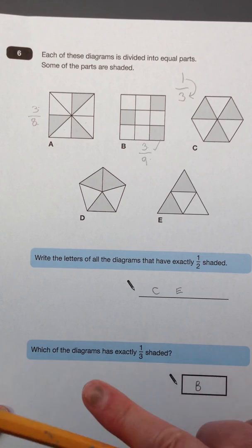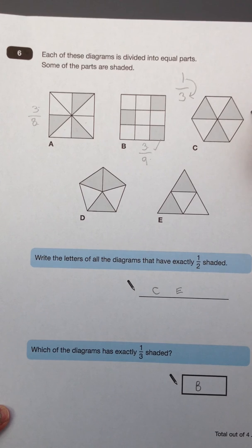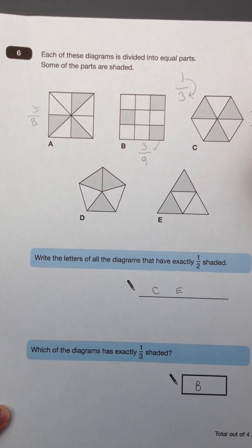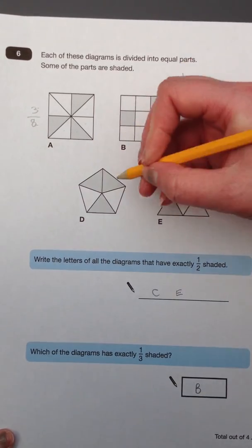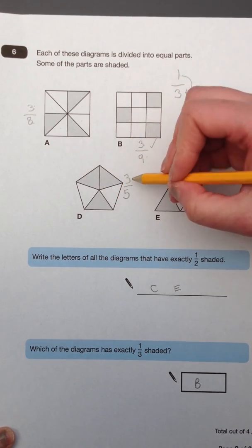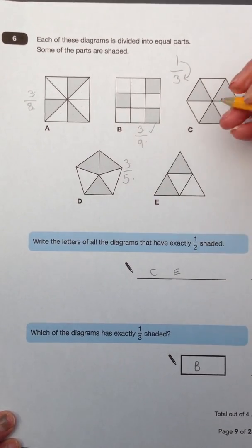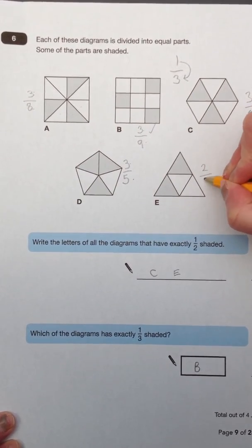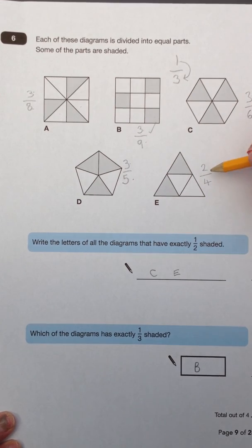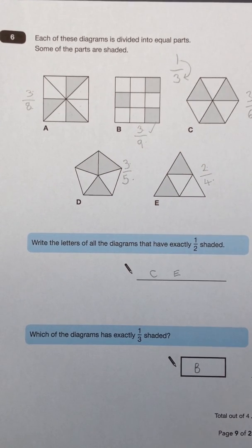We're only looking for one answer here, but let's just check that we've got the right answer. Here we've got 3 out of 6 shaded. 3 multiplied by 3 does not give you 6, so that's not a third. D was 3 out of 5 have been shaded. 3 multiplied by 3 does not give you 5. And 2 out of a possible 4, 2 multiplied by 3 does not give you 4. So we've got our answer there, B is the one that has exactly 1 third shaded.